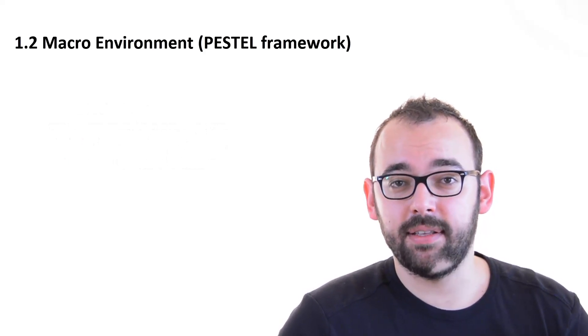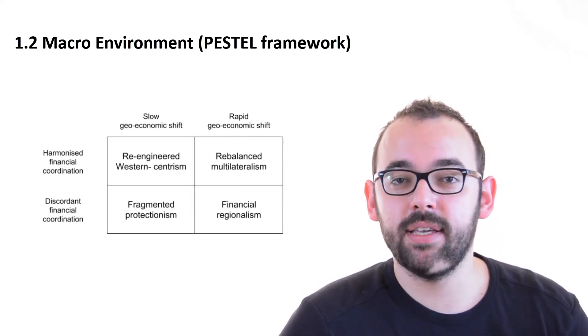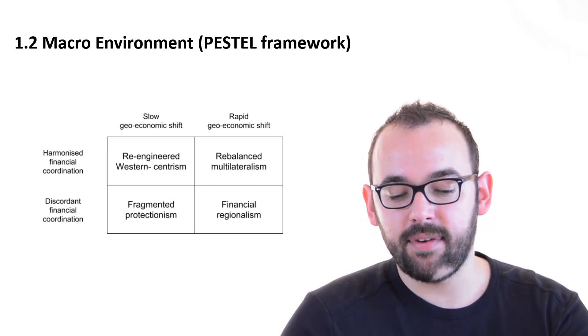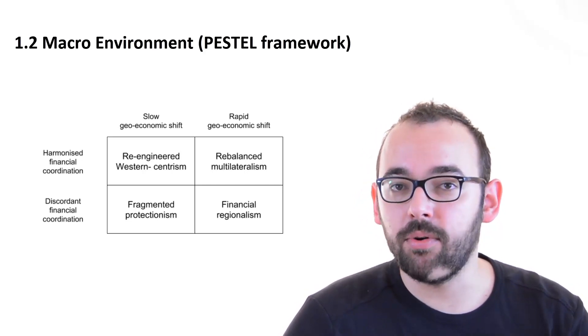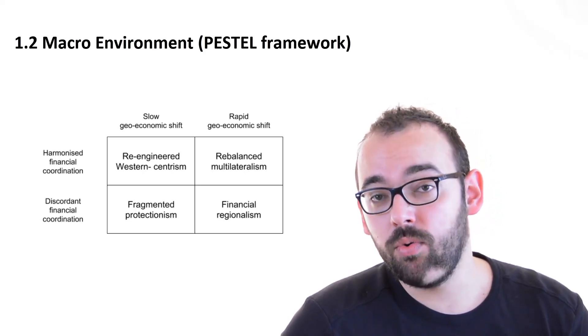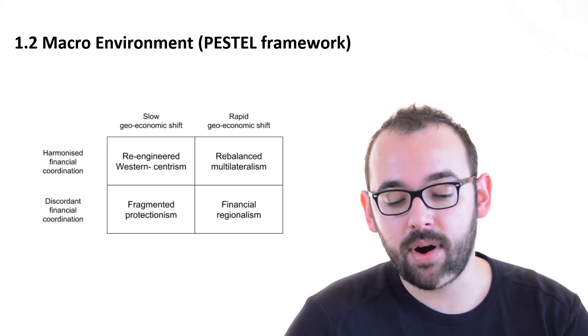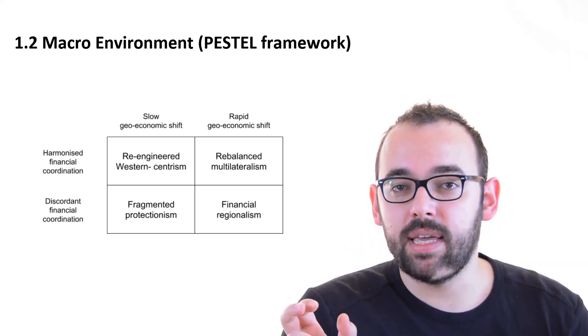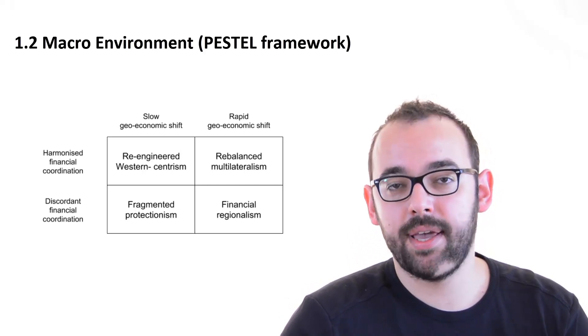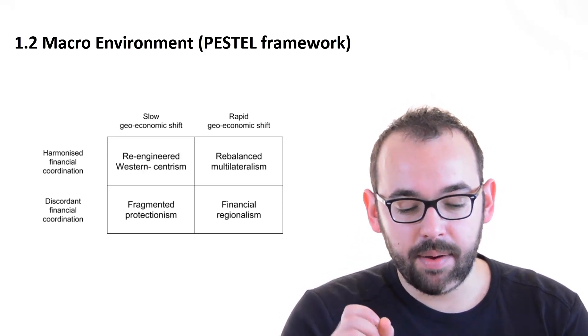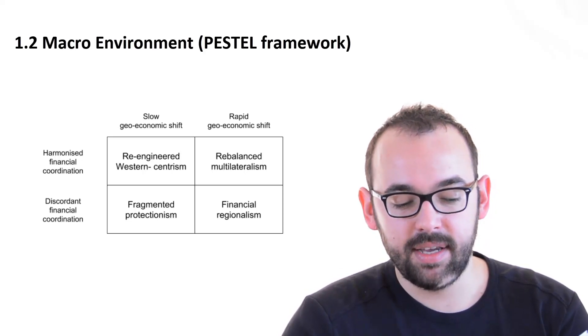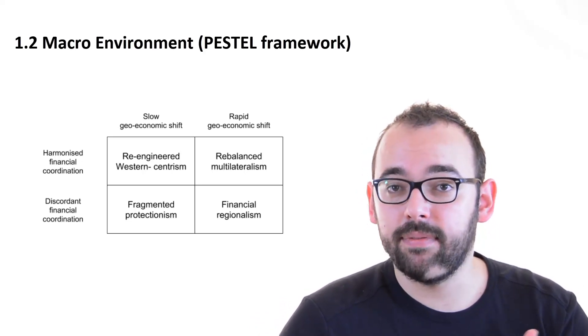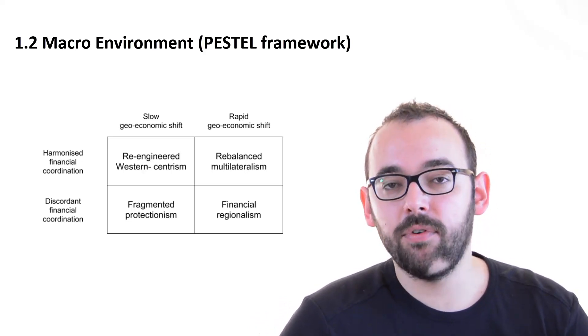Now, once we identify these factors we can start to go for development of scenarios. We can do some simple sort of matrix where on the left side we are going to have either the harmonized financial coordination or discordant and on the top we are going to have slow geoeconomic shift or rapid geoeconomic shift exactly as we talked about. Now, for each one of these we are going to develop a scenario. What would happen? What should we do if rapid geoeconomic shift is happening and there is a discordant financial coordination meaning the regions are not cooperating that well on the financial side? We would go for financial regionalism.